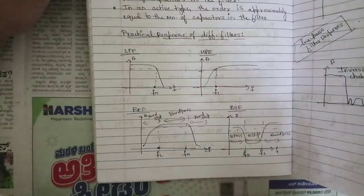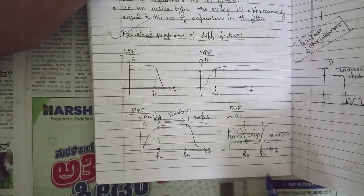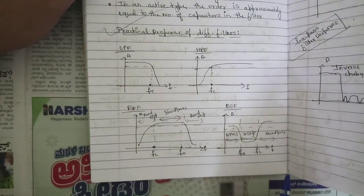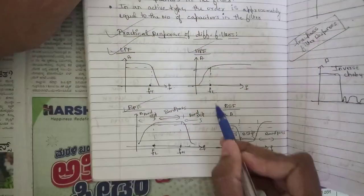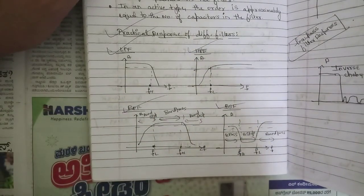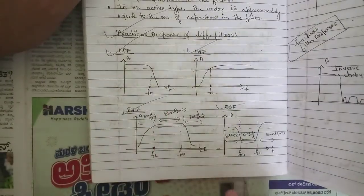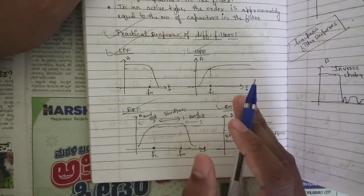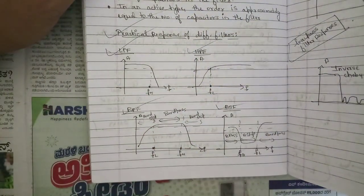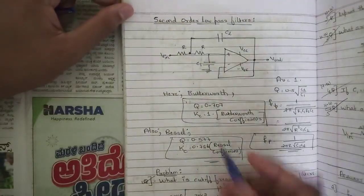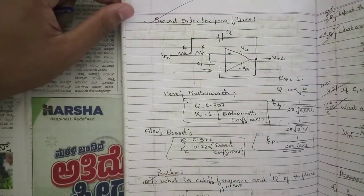One question on the practical response of different filter types will be asked. Draw the response plots for low pass filter, high pass filter, band pass filter, and band stop filter. The low pass filter allows only low frequency signals; the high pass filter allows only high frequency signals and blocks low frequency signals. Also note second-order low pass filters, also called Butterworth filters — this is very important.